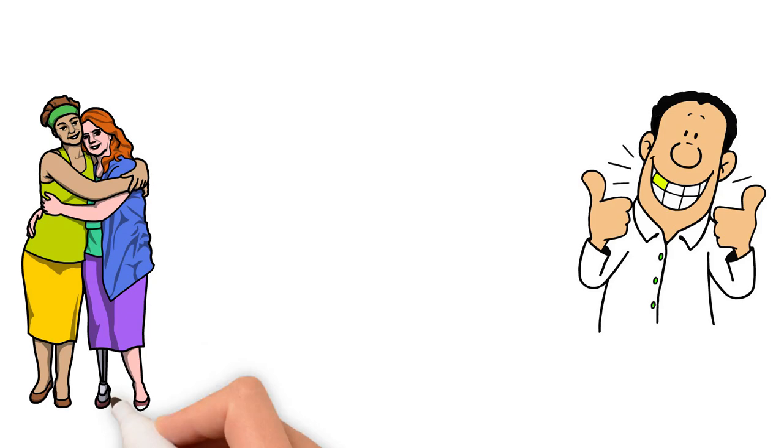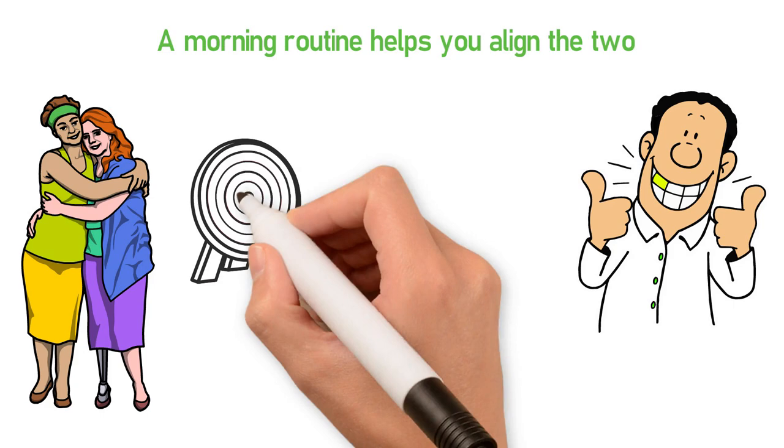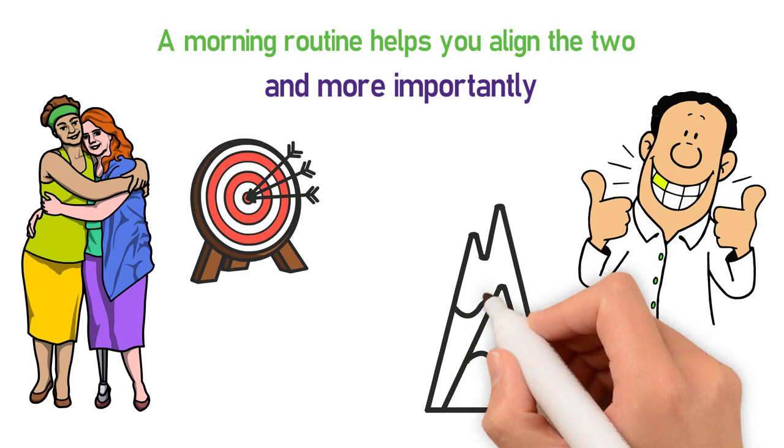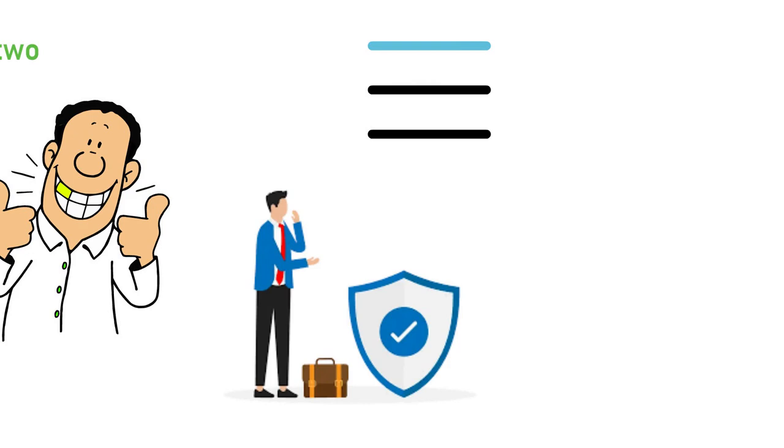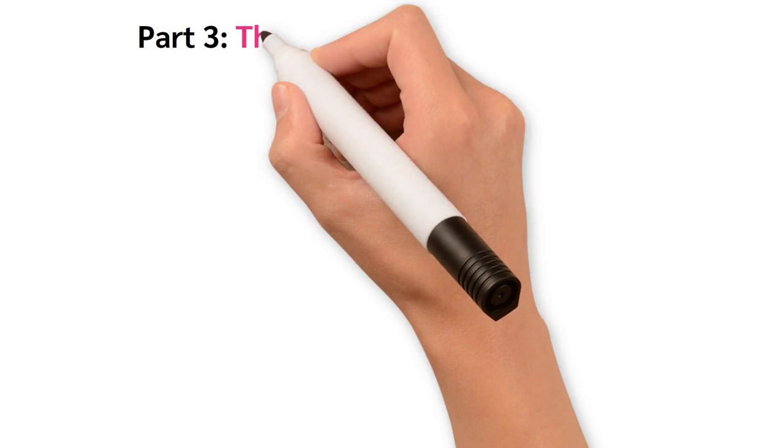And let's not forget alignment, the harmony between daily actions and long-term aspirations. A morning routine helps you align the two. It's the time you dedicate to reminding yourself of your goals and, more importantly, aligning your day's actions to achieve them. This alignment is crucial because it ensures that every day you're building towards your ultimate vision.